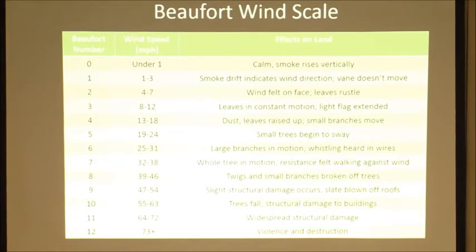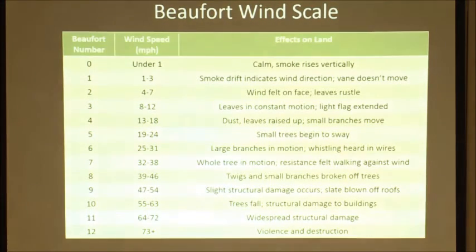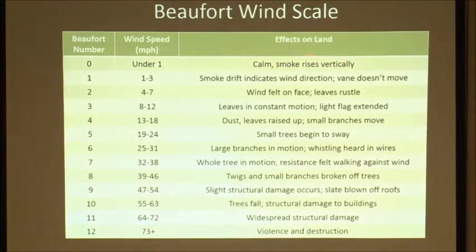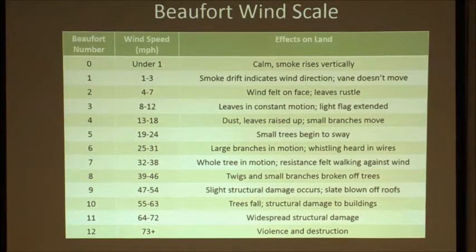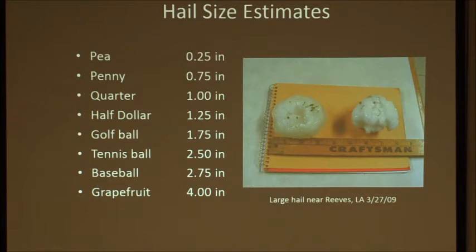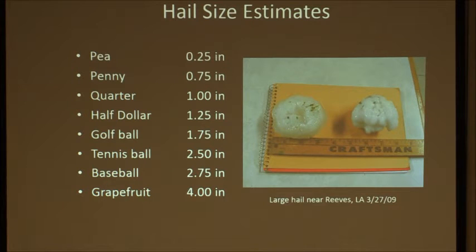This is on the handout from the basic Skywarn class showing different wind speeds and what effects you can see based on land. This wind scale originally started for over-water conditions but is adjusted for land. So when you're looking at trees and what's happening with them, there are different numbers associated. For hail sizes, we always like when people call in reports. It doesn't matter if someone says it's about the size of a dime — you don't need to go out with a micrometer and measure the exact number.